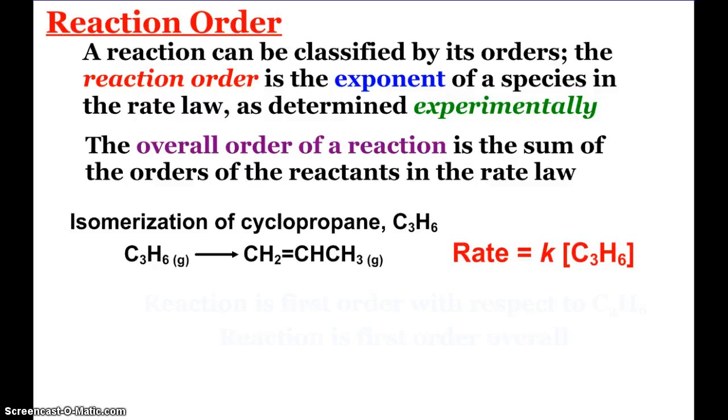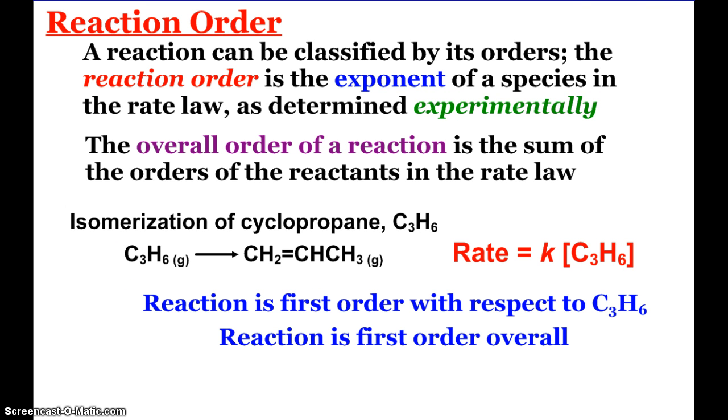A reaction can be classified by its orders. The reaction order is the exponent of a species in the rate law, as determined experimentally. The overall order of a reaction is the sum of those orders for each of the reactants in the rate law. Let's look at a couple examples. First, we see the isomerization of cyclopropane. If I heat up cyclopropane, I break the cyclic part and form a different type of propane. Experimentally, the rate equals K times the concentration of cyclopropane. This reaction is first order with respect to cyclopropane and overall it's a first order reaction.